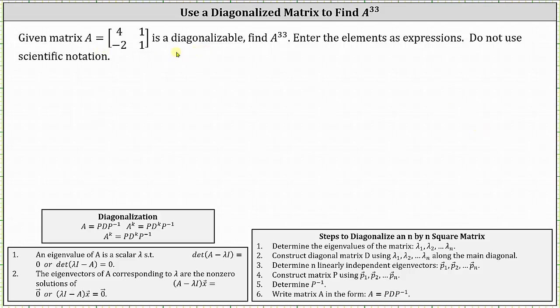We are given matrix A as diagonalizable and we're asked to find matrix A to the power of 33. We're told to enter the elements as expressions and not use scientific notation.